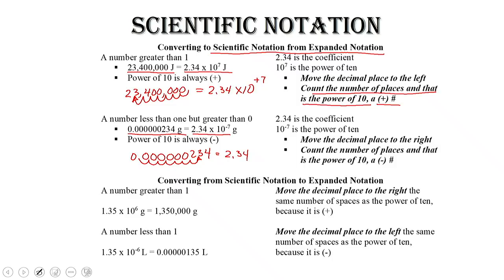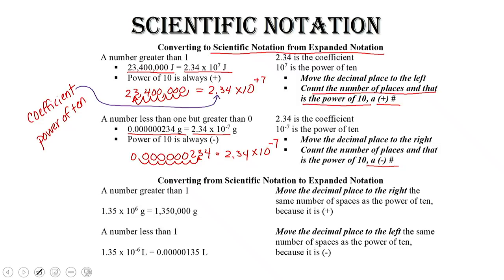Because this number is less than 1, the power of 10 is always going to be negative. So for scientific notation, we always have a coefficient and a power of 10. Our coefficient is this number right here, and our power of 10 is that exponent there.